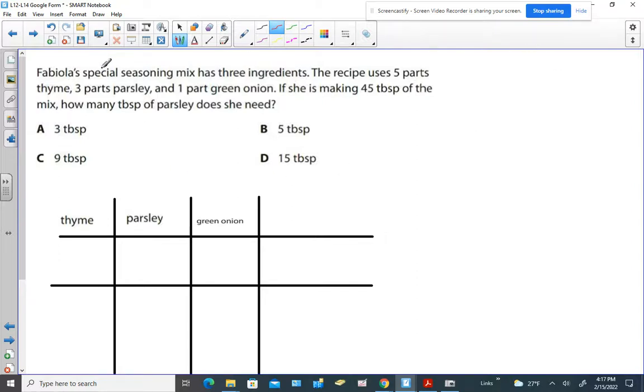Hey everybody, Fabiola's special seasoning mix has three ingredients. The recipe uses five parts thyme, three parts parsley, and one part green onion. If she is making 45 tablespoons of the mix, how many tablespoons of parsley does she need? And we have to pick from the choices.